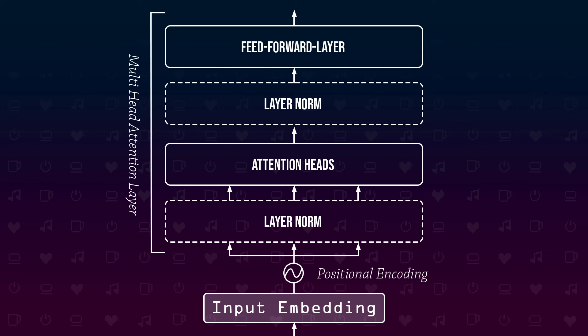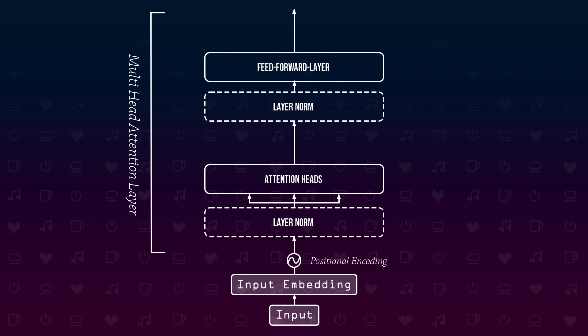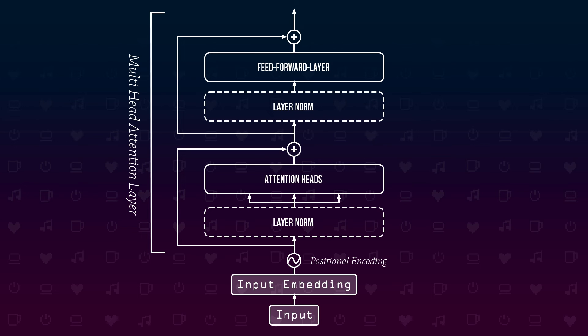In 'Attention is all you need,' layer norm was added after each layer, but nowadays pre-layer norm is the norm. The layer norm layers are part of the multi-head attention layers and will also be repeated if we stack multiple multi-head attention layers. The next normalization mechanism is adding residual connections. A residual connection means we add the input of one layer to the output of that layer. The values going into the layer norm and attention heads are also added to each attention head output, and the input to the next layer norm and feedforward network is also added to the output of the feedforward network. This helps the model learn better during training, because if we encounter vanishing gradients, the model still has the original input to learn from. That is the finished multi-head attention layer.